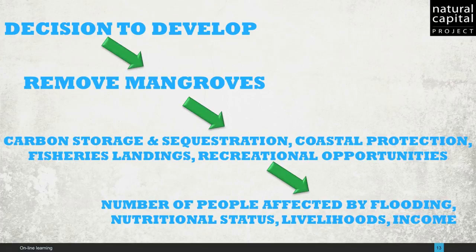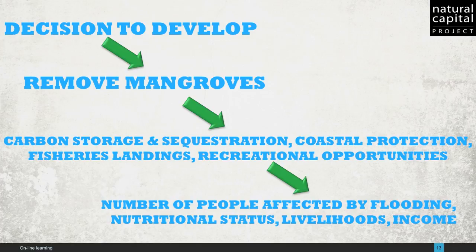I'd like to close with some hints about the utility of these concepts in forming decisions. Take the mangroves we just talked about. A decision to develop a stretch of coastline might involve the removal of mangroves. Before acting, decision makers can explore the consequences of such an action on a wide range of ecosystem services, such as carbon storage and sequestration for climate regulation, protection against coastal hazards, food from fisheries, and recreational opportunities. These can all be measured in biophysical terms — things like metric tons of carbon or area of flooding avoided — and also economic metrics — things like the social cost of carbon or avoided damages. And ultimately, changes in ecosystem services lead to changes in human well-being, as measured by things like the number of people affected by flooding, nutritional status, livelihoods, and income.